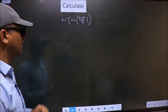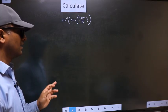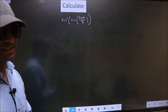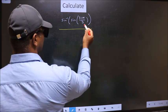Calculate sin inverse sin 31π by 3. How do we calculate it? We should get the answer for this one.